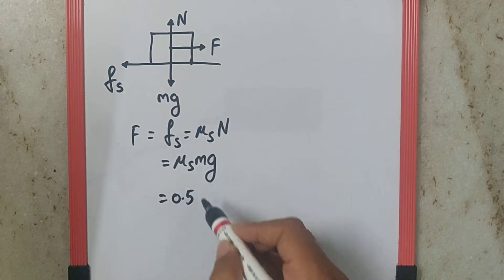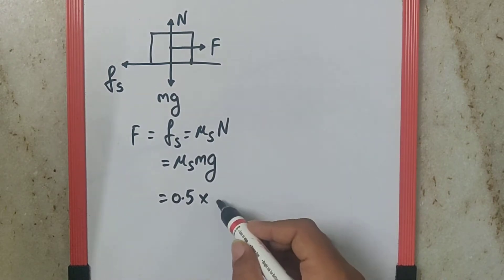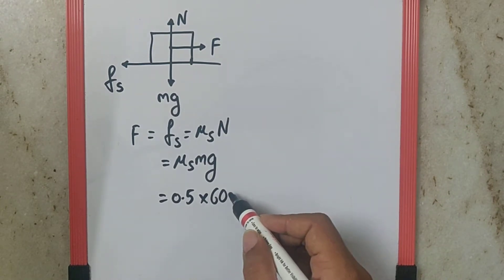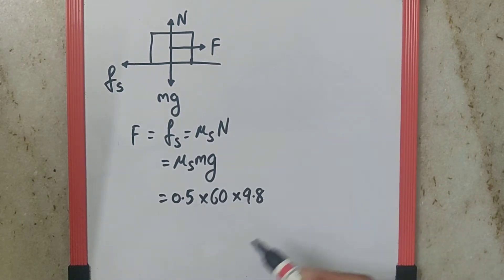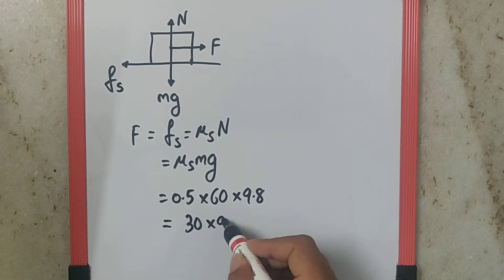Now mu is given as 0.5, M given as 60, G we can take it as 9.8. That makes this as 30 into 9.8.